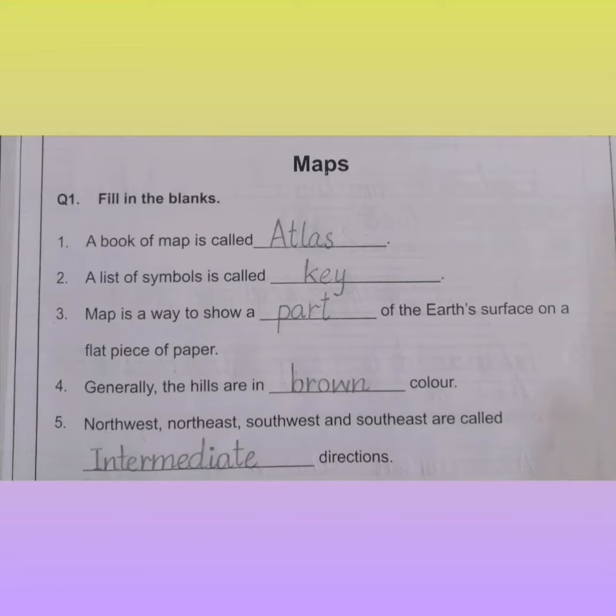Number 4: generally the hills are in dash color — brown. Number 5: northwest, northeast, southwest, and southeast are called dash direction — intermediate direction.